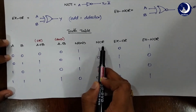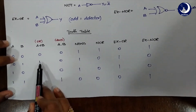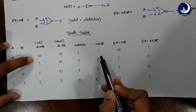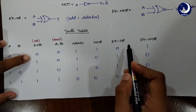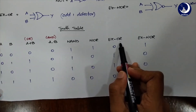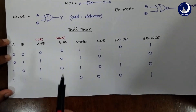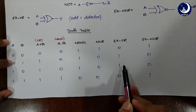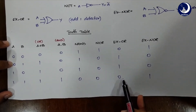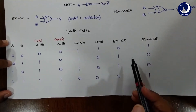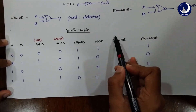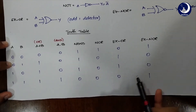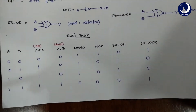NOR is also basically complementing the OR gate. So for the OR values 0, 1, 1, 1 — its complements are 1, 0, 0, and 0. Now XOR, as we know, is an odd-one detector. So for only the values 01 and 10 we have 1, and the rest are 0. XNOR is basically the complement of XOR. So for 00 it will be 1, for 01 and 10 it will be 0 and 0, and for 11 it will be 1.